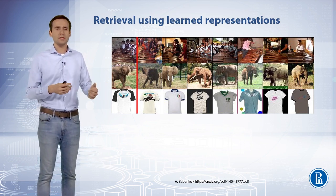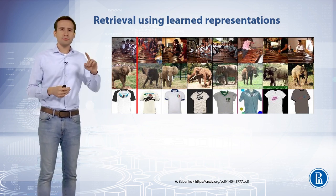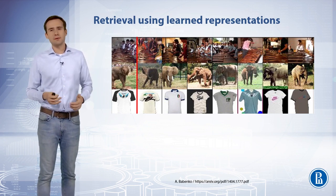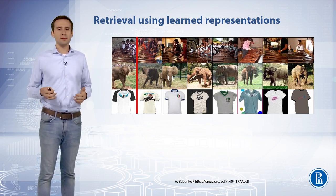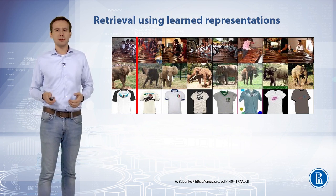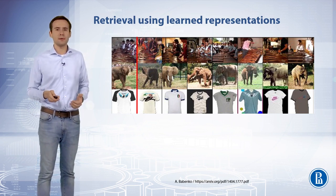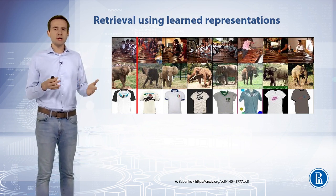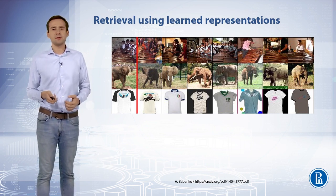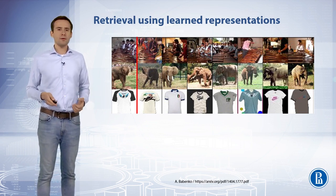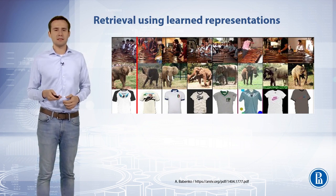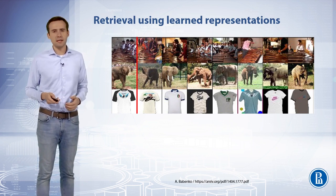Notice that at the pixel level the retrieved training images are generally not close in Euclidean distance to the query images in the first column. For example, the retrieved ships and elephants appear in a variety of poses. Moreover, the elephant class may have never been present in the original training data.